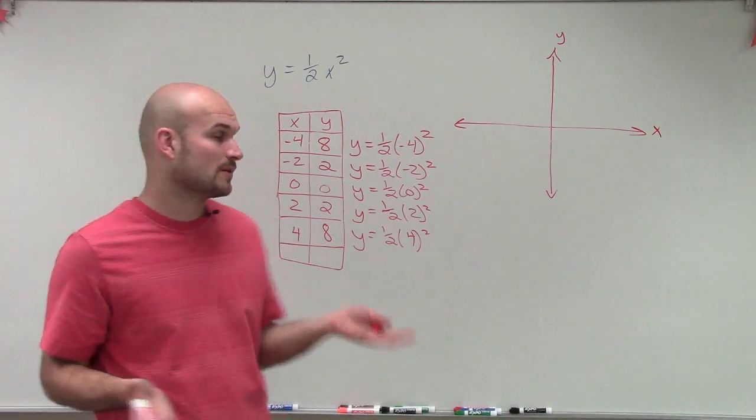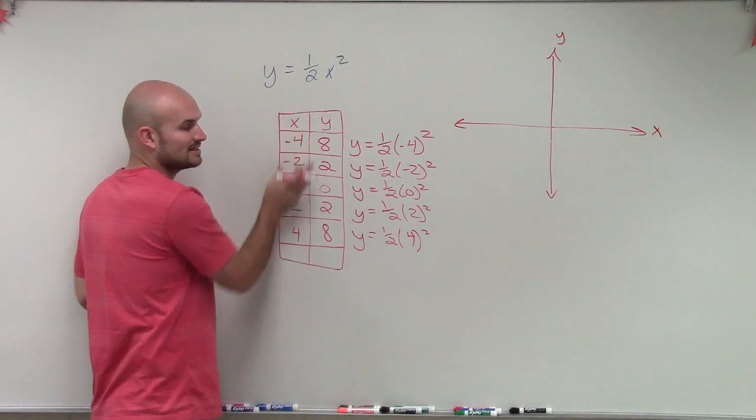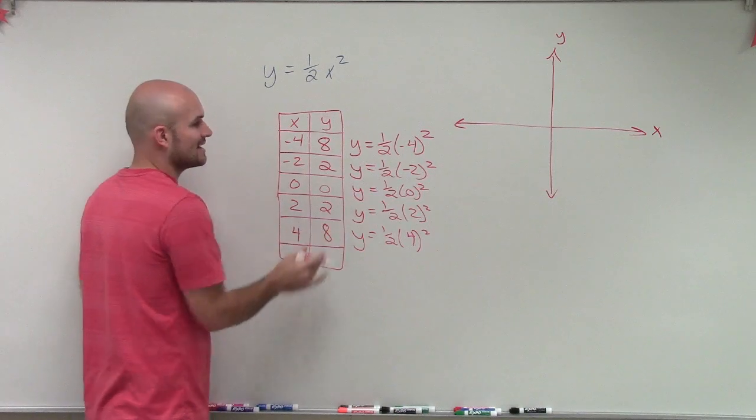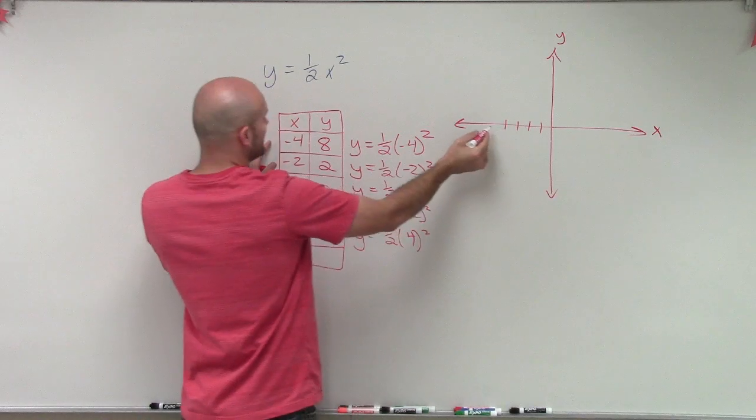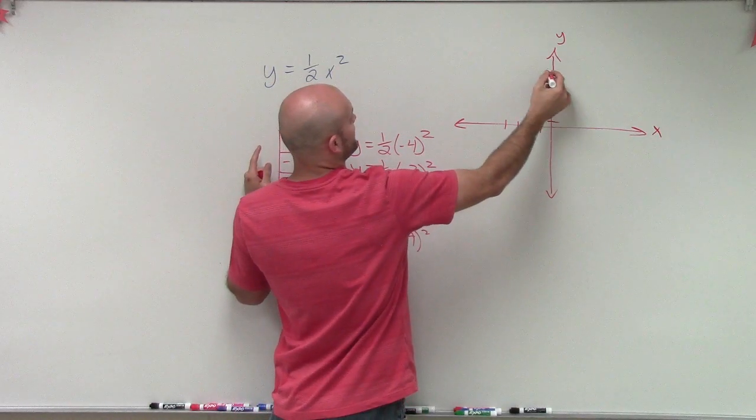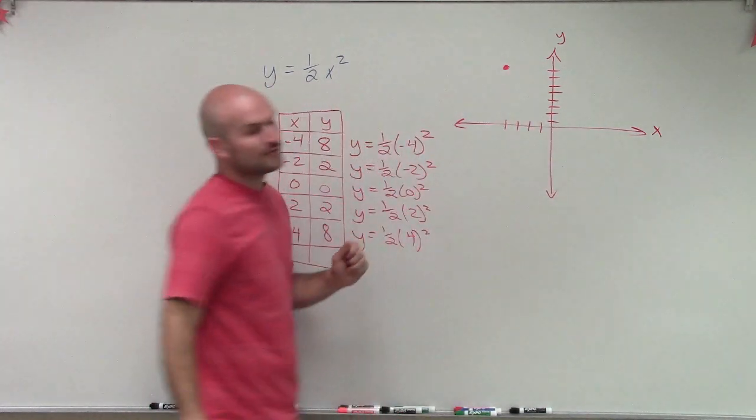So now to graph our function, what we're going to do is we're going to plot these points. Now, remember, x represents the coordinate on the x-axis. And y represents the coordinate on the y-axis. So the first one, I go over to negative 4. So 1, 2, 3, 4. And now I need to go up 8. 1, 2, 3, 4, 5, 6, 7, 8. So I try to do this the best I can from over there.